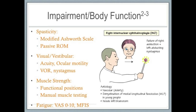Visual and vestibular dysfunction can occur with MS and affect balance and gait. Testing visual acuity and ocular motility helps identify limitations such as diplopia or residual deficits from optic neuritis. VOR and nystagmus testing can determine if central vestibular dysfunction is present. Muscle strength is often decreased in people with MS — primary weakness occurs due to CNS nerve damage, and secondary weakness from disuse and deconditioning. Fatigue is one of the most common symptoms in MS and can affect endurance, cognition, and overall function. The visual analog scale (0–10) and the MFIS outcome measure can help quantify fatigue.